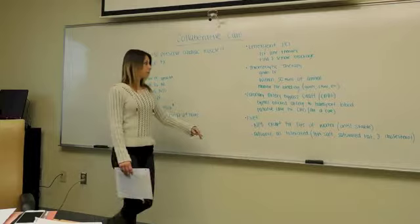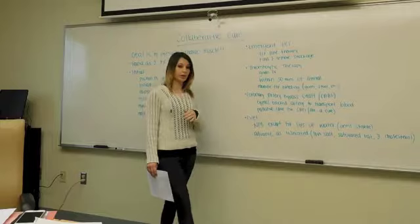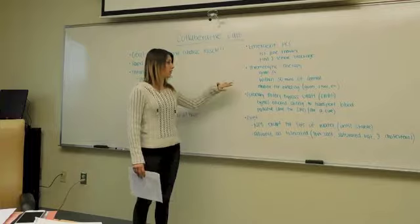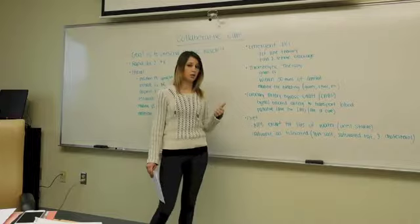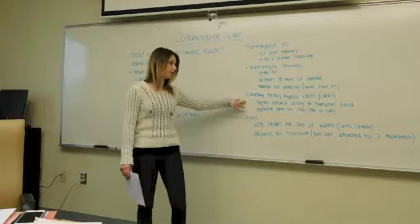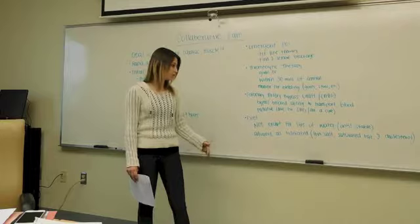Another procedure that can happen is emergency PCI. This is usually the first-line therapy for somebody with a myocardial infarction. This is going to find the clot and remove it. Next, you have the thrombolytic therapy, which I talked about earlier. This is all given IV, and it needs to be given within 30 minutes of their arrival to the ED. With that, you want to monitor for bleeding, such as the gums or in stool. Another procedure is the coronary artery bypass graft, or CABG. This is going to bypass the blocked artery and transport blood to the heart. This is usually done as palliative care for somebody who already has coronary artery disease, and it is not a cure.